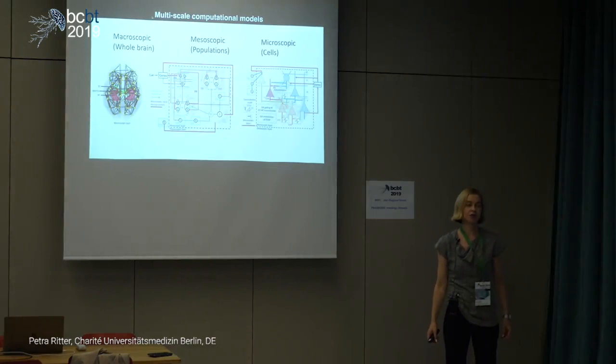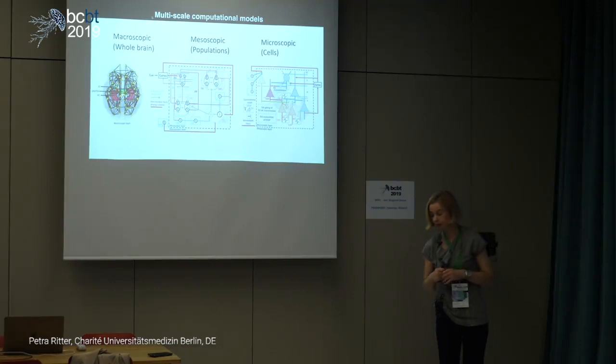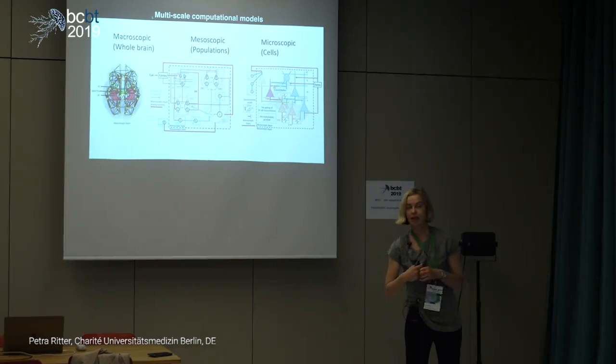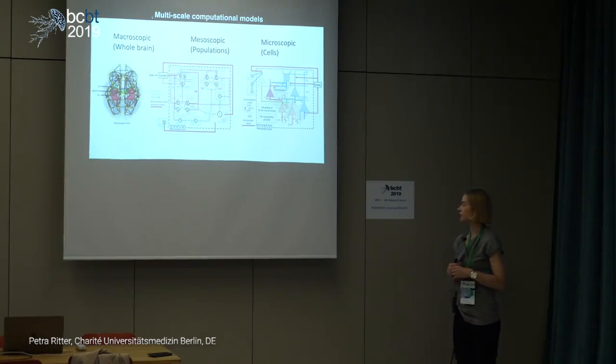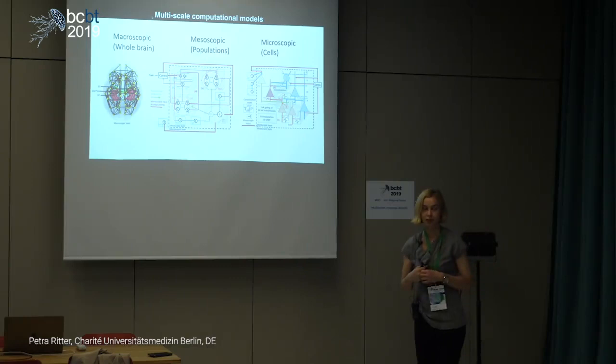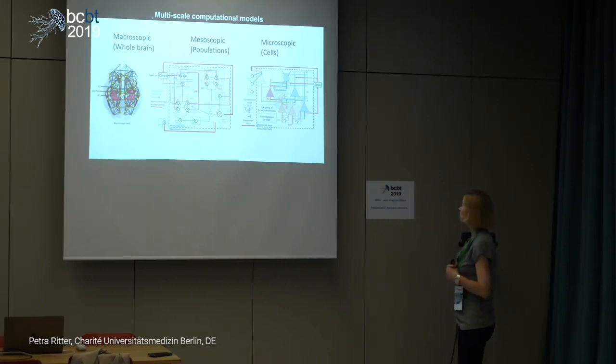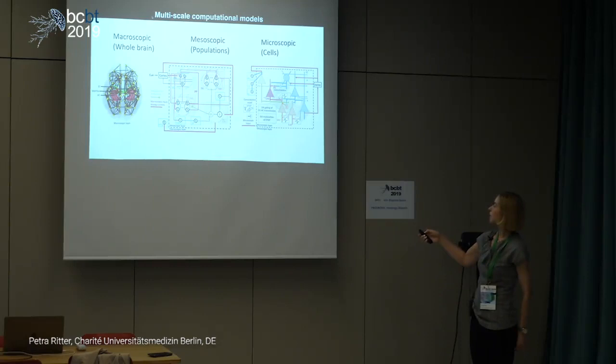We soon noticed that for many cases, population models oversimplify the situation, because the brain is complex for a purpose. To investigate phenomena like learning and memory, we need more detail, but it remains impossible to simulate the hundred billion neurons of the brain. The solution we are developing now — and several other groups are too — are multiscale simulations.